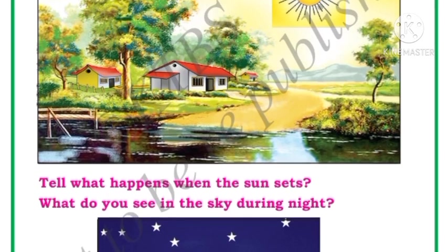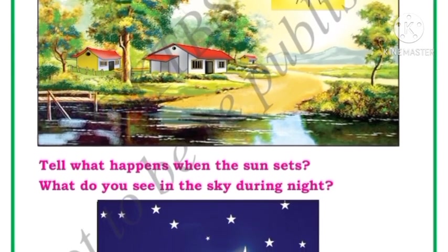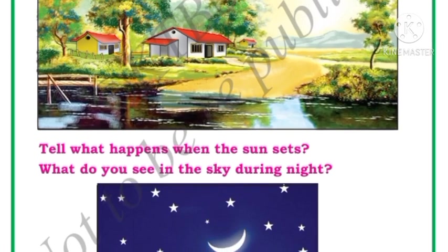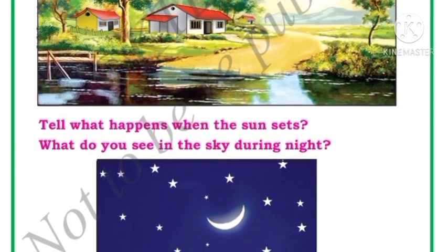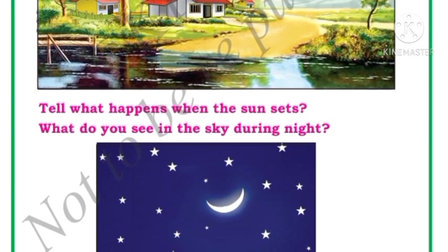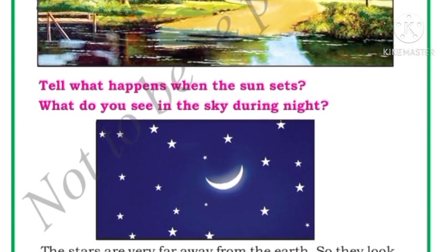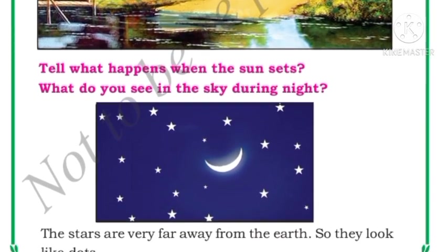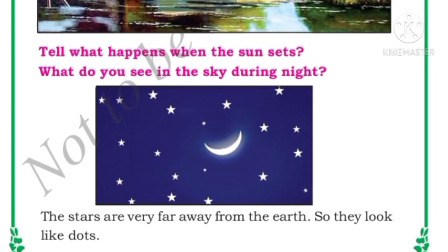What happens when the sun sets? When the sun sets there will be no sunlight and there will be darkness. In the sky you can see the stars and the moon. What do you see in the sky during night? You see the moon and the stars. The stars are very far from the earth, so they look like tiny dots.